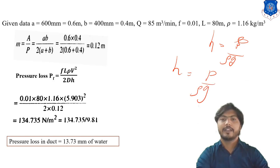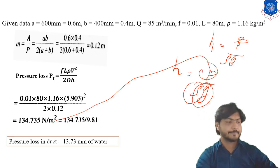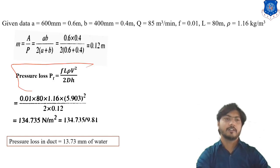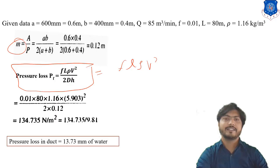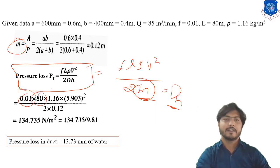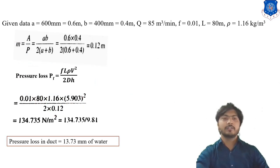The formula for pressure loss in the duct is PF = f × L × ρ × V² / (2 × DH), where M and DH are equal — M is called hydraulic mean depth, also written as DH. The friction factor is given, L is the length, ρ is density, and velocity was already calculated. With DH = 0.12 m (hydraulic mean depth), all values are substituted and the final answer is calculated.